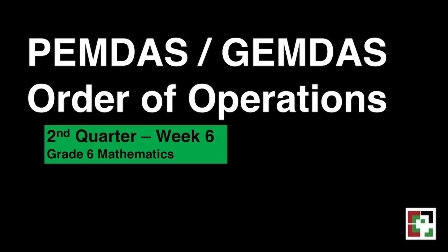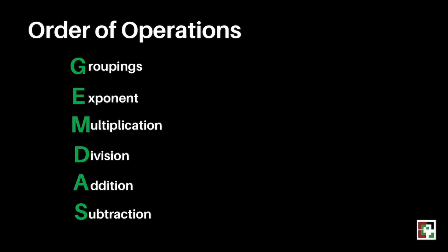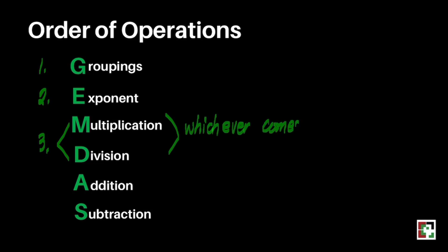PEMDAS is an acronym used to remind people of the order of operations. This means that you don't have to solve math problems from left to right. Rather, you solve them in a predetermined order given by the acronym PEMDAS or BODMAS. First, we have the groupings, which includes parentheses, brackets, and braces. Second, we have the exponent. Third, we have multiplication and division — whichever comes first. And fourth is addition and subtraction, whichever comes first.